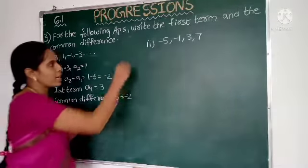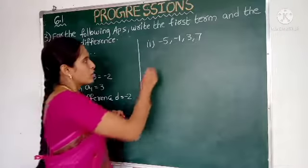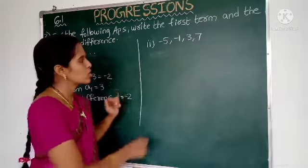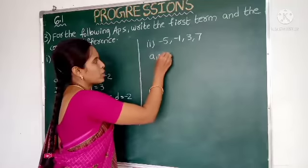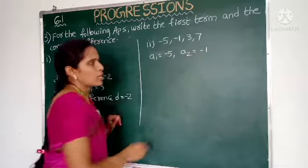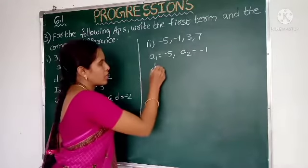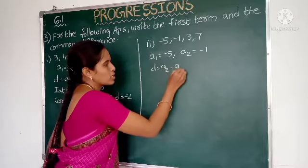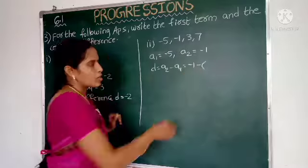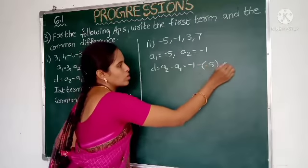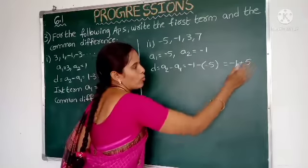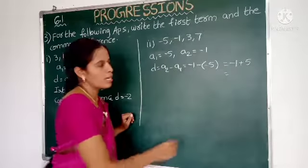Now, see the second question. What are you given? Minus 5, minus 1, 3, 7 are the first four terms. So A1 equals minus 5 and A2 equals minus 1. How to find out the common difference? D equals A2 minus A1. A2 is minus 1, minus minus 5. So the answer is minus 1 plus 5. 5 minus 1 is 4.